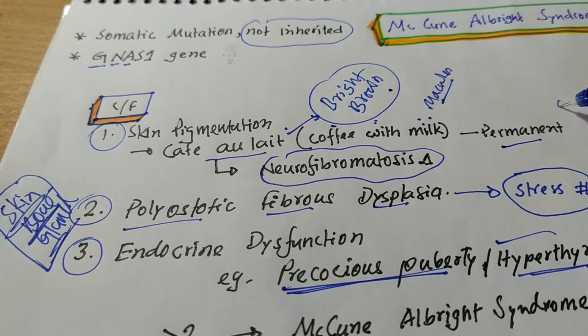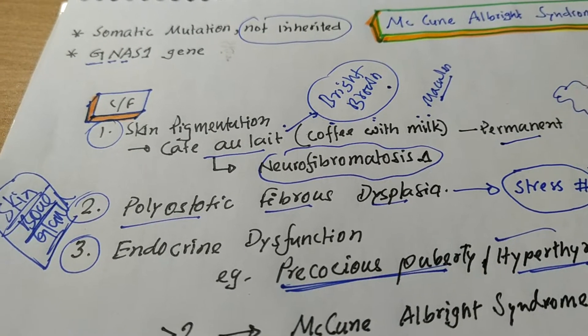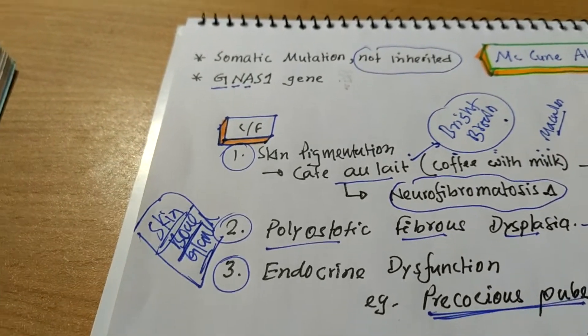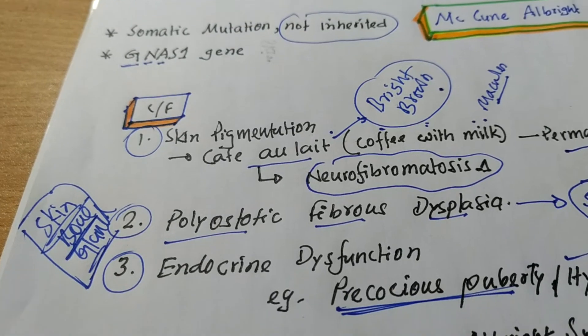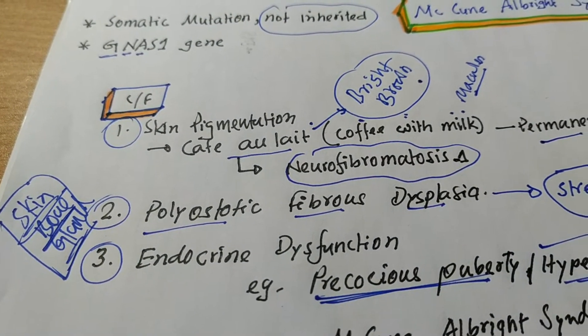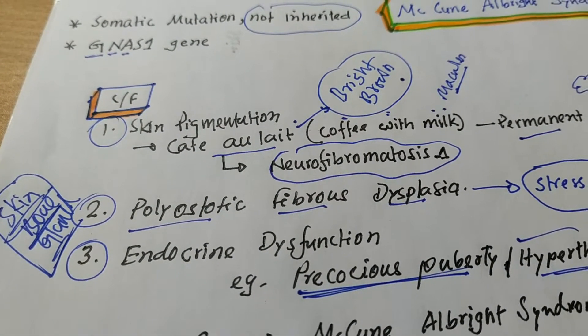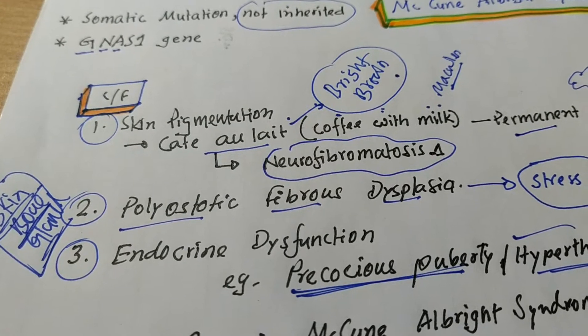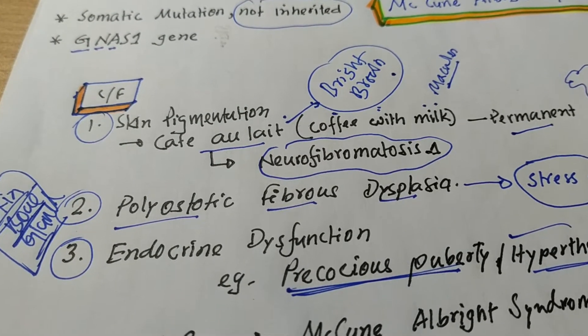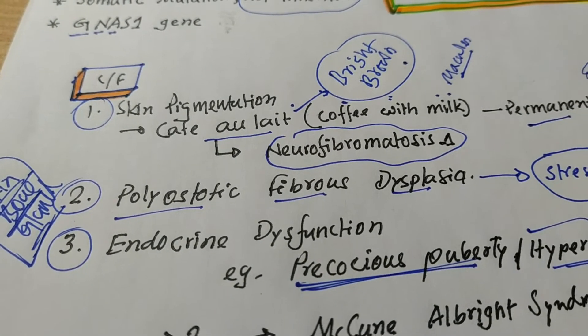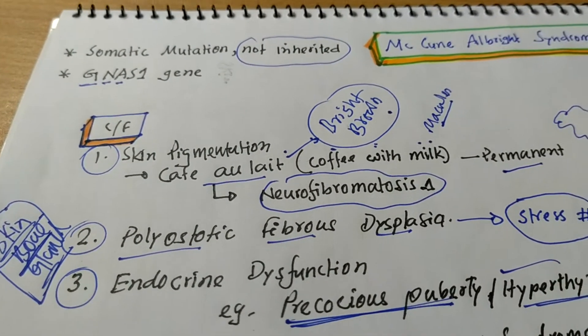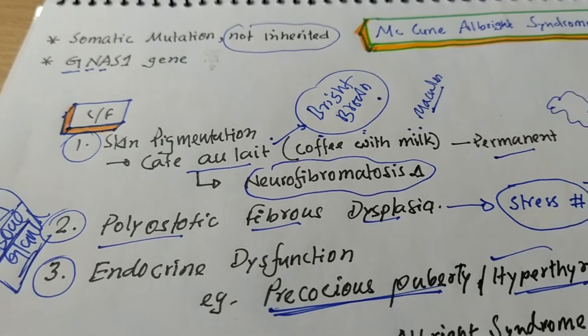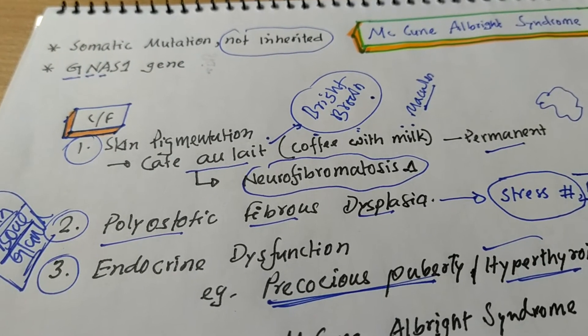And it is usually irregular in margin, ragged margin. So what are the conditions where cafe-au-lait are found? Cafe-au-lait are found in McCune-Albright syndrome and another important neurofibromatosis 1. So neurofibromatosis 1 and McCune-Albright syndrome, these two are the most important entities where cafe-au-lait type of pigmentation are found.